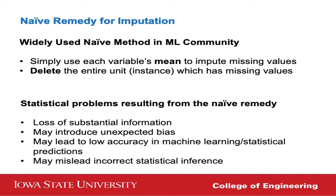First, I want to talk about naive remedies — how to handle missing data these days. A widely used naive method in the machine learning community is to simply use each variable's mean value. They take each column's observed values, compute the mean, and fill in the missing part — we call that the mean-based naive method. Another approach is to delete entire instances that have missing values. Many statistical and machine learning packages do this automatically — they simply delete incomplete rows.